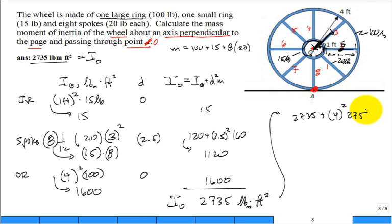And no calculator, right? There you go. That's pretty good. And so it's 4 squared times 275. Add that to 2,735. And we get that it's 7,135 pound mass foot squared. That's the mass moment of inertia about the point A.